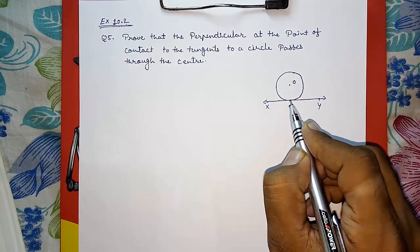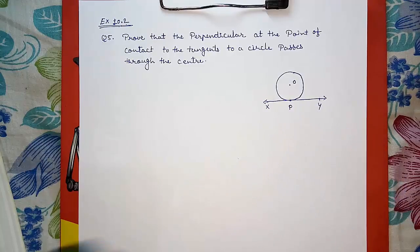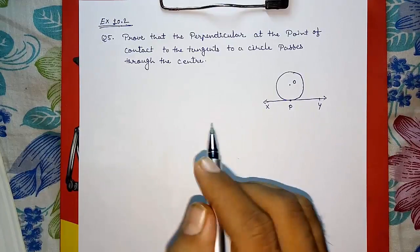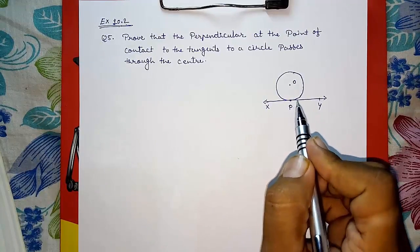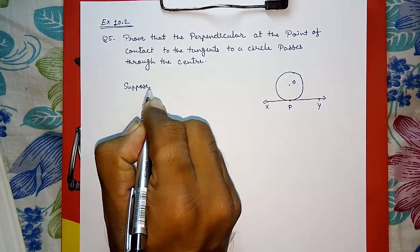We cannot directly prove that every time it passes through the center, so how do we prove this? We have to suppose it is not passing through the center.